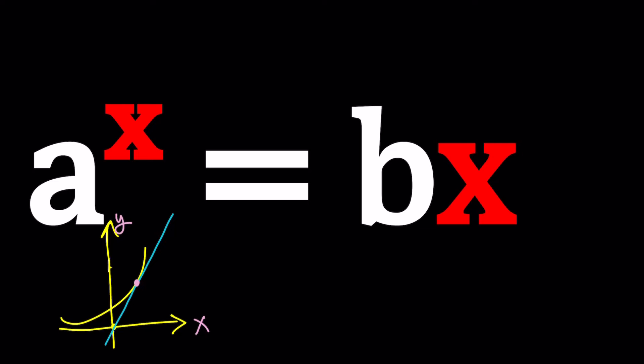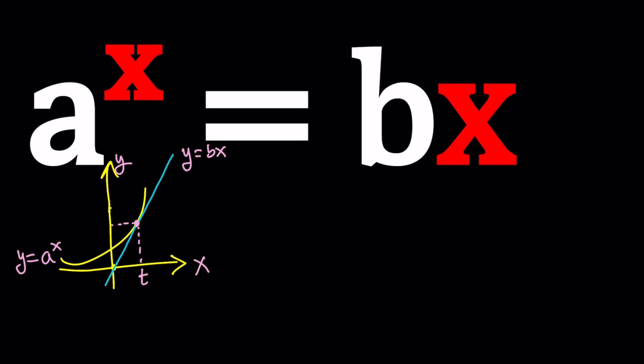Suppose they're tangent — the point of tangency is a single intersection point. But it's not crossing the curve; they're just touching. Let's call that point something — maybe t. The x-coordinate I'll call t. We have two things here: y equals bx and y equals a to the power of x, so it depends on which function you use for your y value.